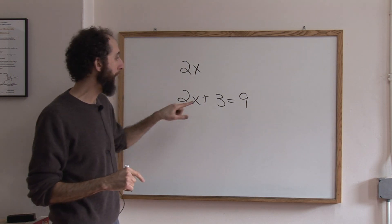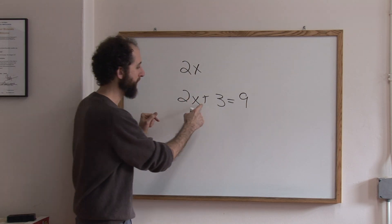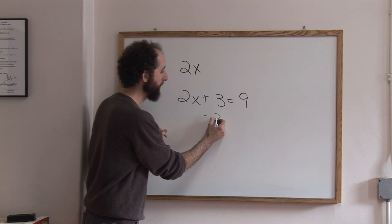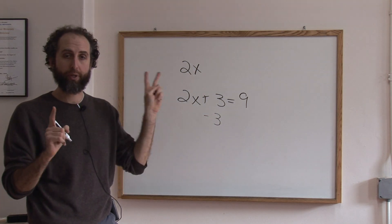The way you do that is you do the opposite of whatever you've got. If you've got plus three, you're going to subtract three. That's rule number two: do the opposite.